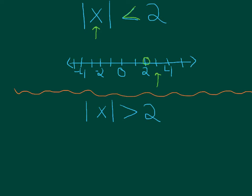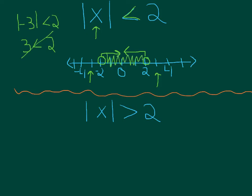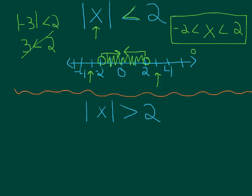So let's put a circle at 2 and look at numbers less than 2. However, what happens if you plug in negative 3? The absolute value of negative 3 — is that less than 2? This becomes a positive 3, and 3 is not less than 2, so that doesn't work. So anything below negative 2 doesn't work. It ends up being all numbers in between negative 2 and 2. So this absolute value inequality turns into an and compound inequality.